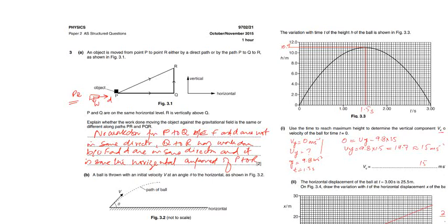Q to R - now the work done from P to Q is zero because F and D are not in the same direction. Q to R has work done because F and D are in the same direction, and it is the same as the horizontal component of P to R. So that is the answer.